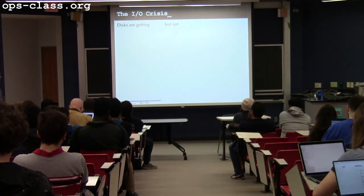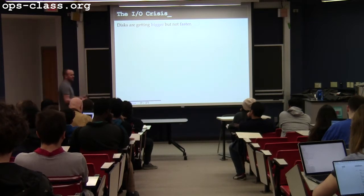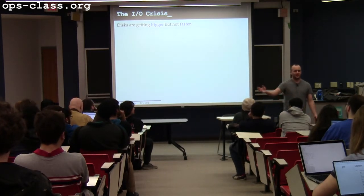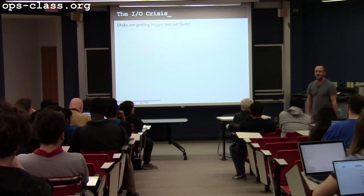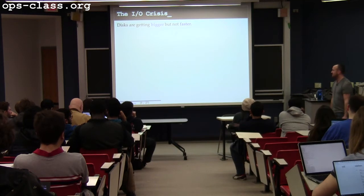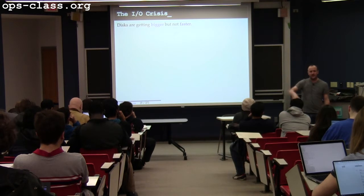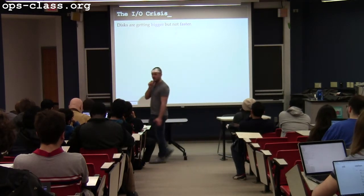For a long time disks were becoming bigger but not faster. People are generating more data. To give some context: when I was in college, I had a 20-gigabyte hard drive and thought that was pretty huge. My small hard drive was four gigabytes — that was what came with the computer. Now how many people have a two-terabyte drive? That's several orders of magnitude. Disks have gotten quite a bit bigger, though that curve has slowed down a bit.